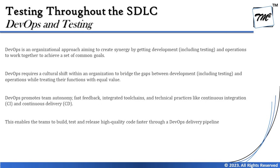The next important topic is DevOps and testing. This is one of the new topics being added to the syllabus for the first time. We are trying to understand how DevOps and testing work together in today's scenario. DevOps is basically an organizational approach aiming to create synergy by getting development — including testing — and operations to work together to achieve a set of common goals. As a word, DevOps is a combination of development and operations: development covers the coding and implementation phase, while operations is when it goes live into the target environment.